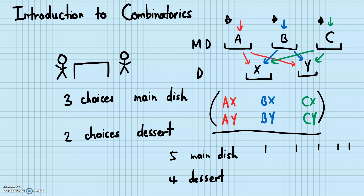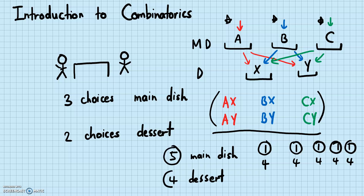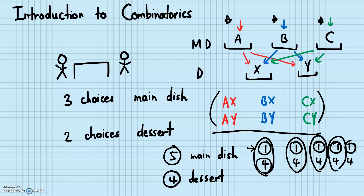There are five main dishes — I'm just using sticks to represent them — and for each of those main dishes there are four possible desserts. So there are four possibilities here, four here, four here, four here, and four here. What you're doing to get all possible combinations is multiplying the number of main dishes by the number of desserts. For each of the five main dishes we can choose four desserts, giving four different combinations each, so that's 5 times 4 equals 20 combinations total.